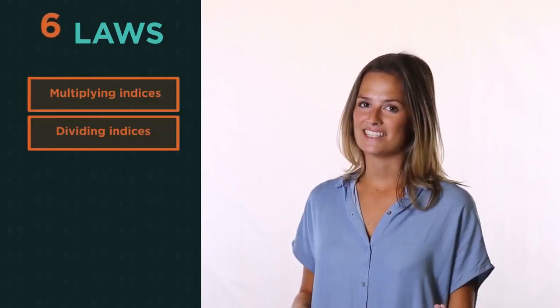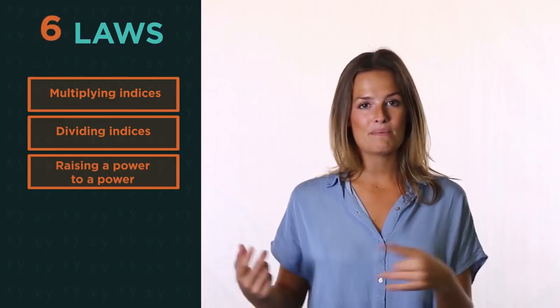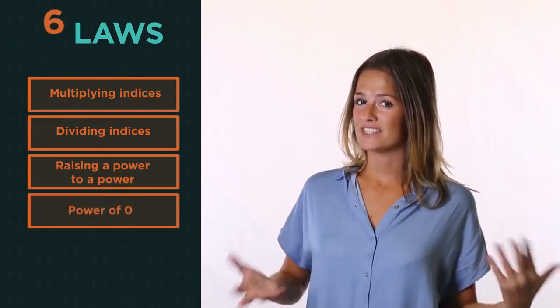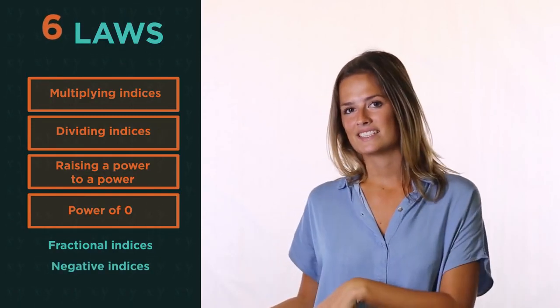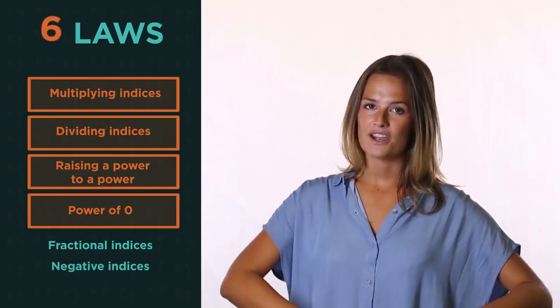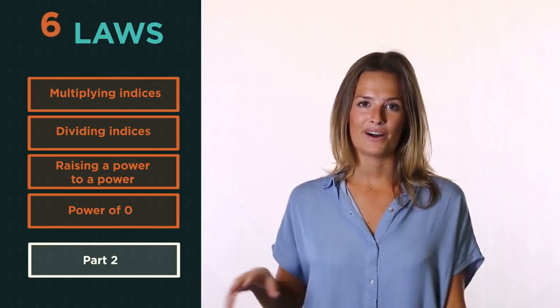So there are six laws that we need to know: multiplying and dividing with indices, raising a power to a power, what a power of zero means, and then fractional and negative indices. We're going to look at the first four in this video and then the last two in part two. I promise you they really are quite logical.